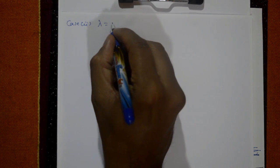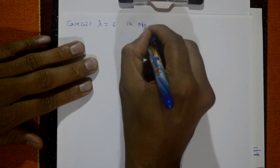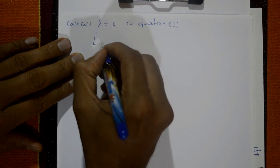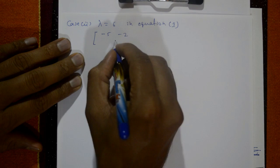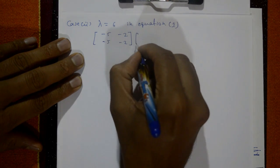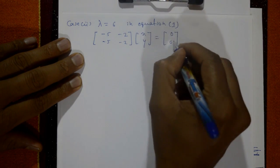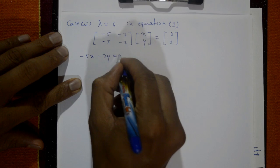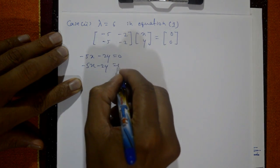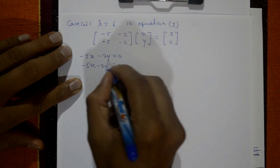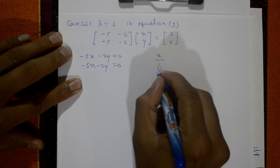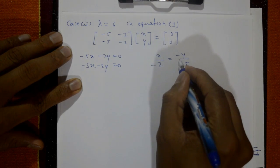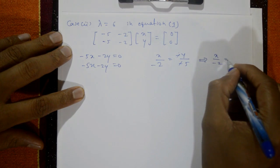Case 2: λ = 6 in equation number 1. The matrix becomes [[−5, −2], [−5, −2]] times [x, y] = [0, 0]. Writing in equation form: −5x − 2y = 0 (both rows give the same equation). Taking any one equation: x by −2, and minus y by −5, so minus signs cancel giving x/2 = y/(−5).